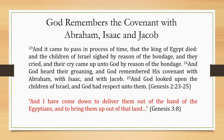God remembers the covenant with Abraham, Isaac, and Jacob. 'And it came to pass in process of time that the king of Egypt died and the children of Israel sighed by reason of the bondage. And they cried and their cry came up unto God by reason of the bondage. And God heard their groaning and God remembered his covenant with Abraham, with Isaac, and with Jacob. And God looked upon the children of Israel and God had respect unto them.'